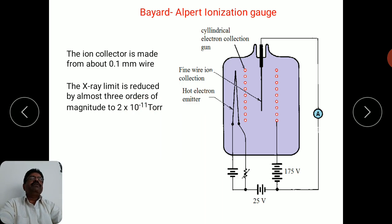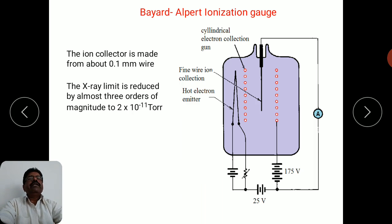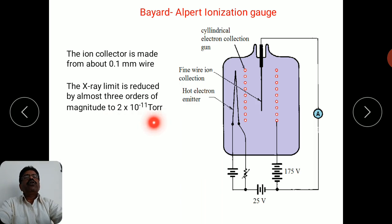That is the advantage of this particular design — simply keeping the filament outside and having a very small area ion collector electrode. This new design can specifically be used for measurement of pressure up to 2 into 10 raised to minus 11 torr.